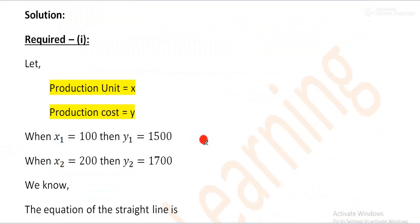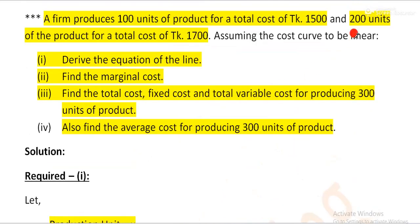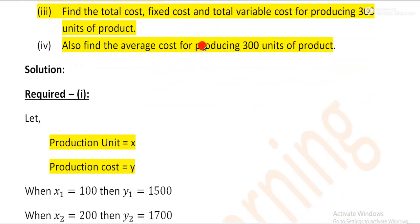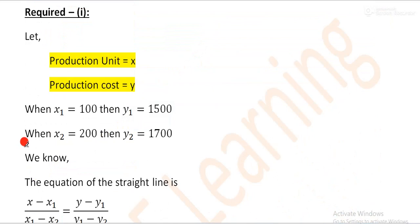When x₁ equals 100, then y₁ equals 1500. So when x is equal to 100, y is equal to 1500. When x is equal to 200, then y is equal to 1700.